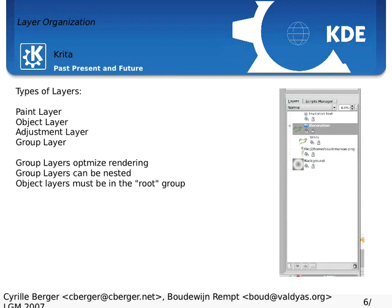Every Krita is a layer-based image application, just like every serious image raster application since the first version of Photoshop that supported layers. You've got four types of layers. Paint layers are the areas you paint on — that's pretty obvious but essential. An object layer is one of those layers that contains, for instance, a KWord text frame, or a KChart chart, or if you want to be really silly, a KSpread spreadsheet — write a spreadsheet in your image.